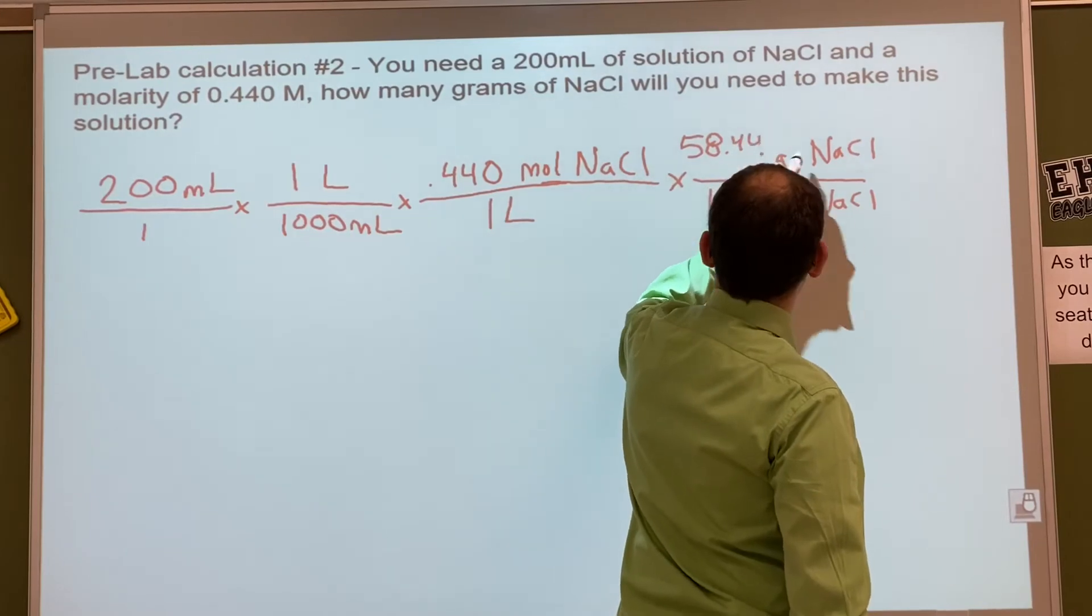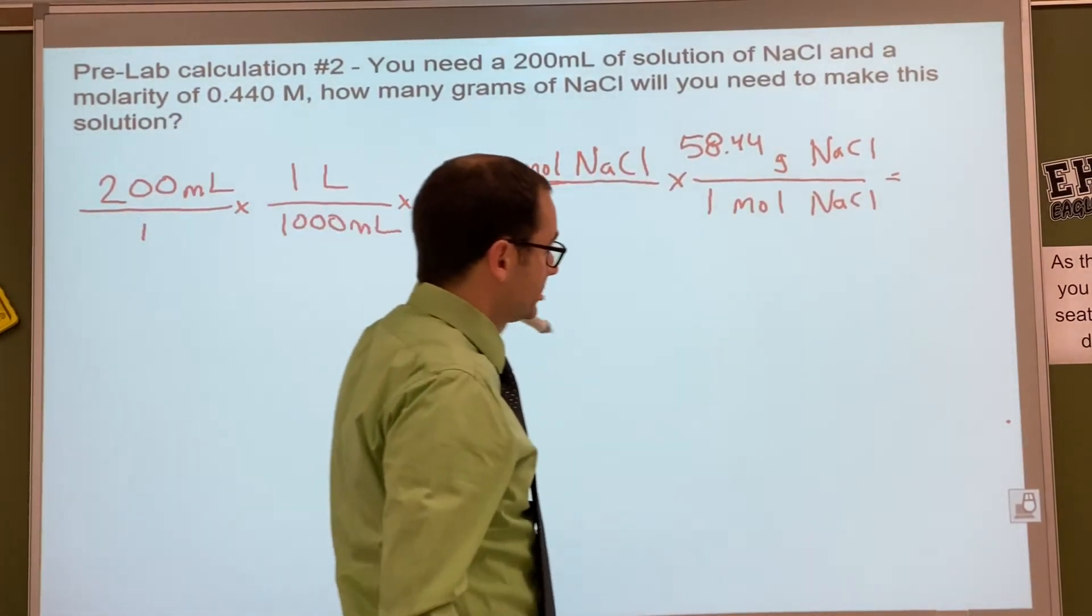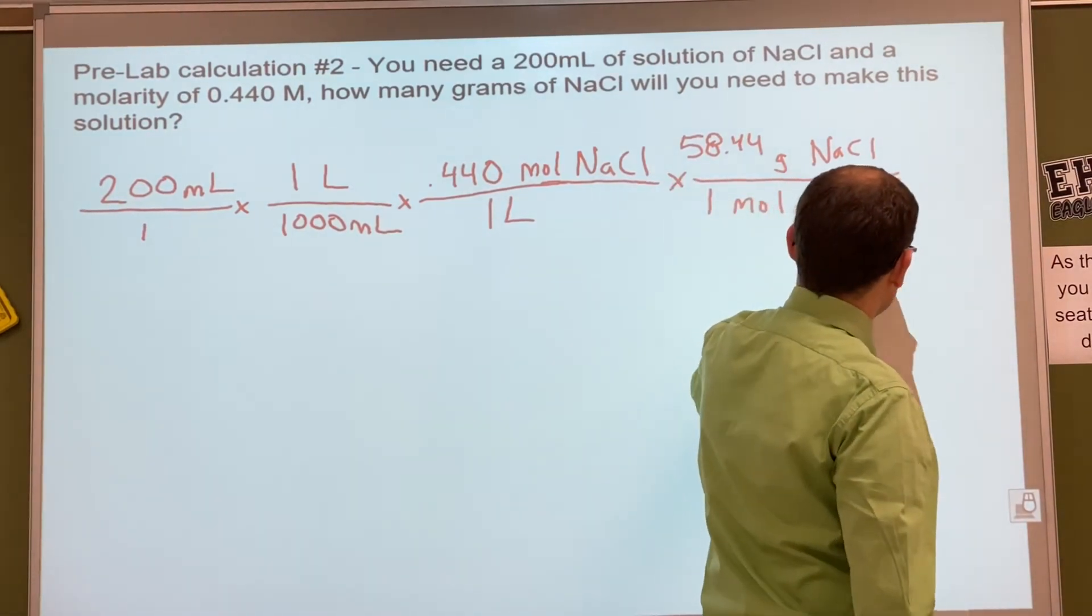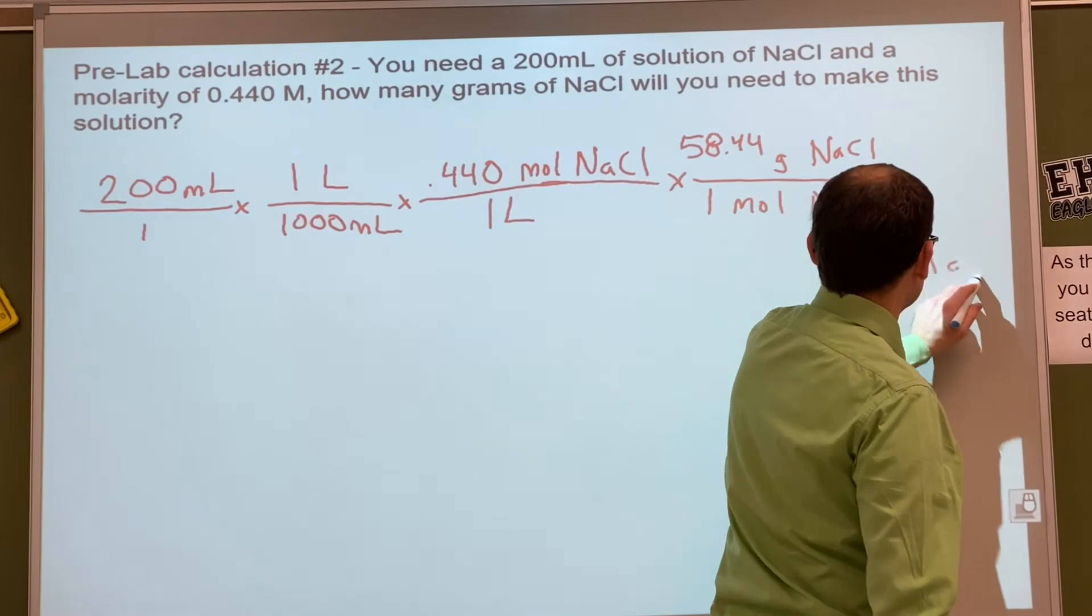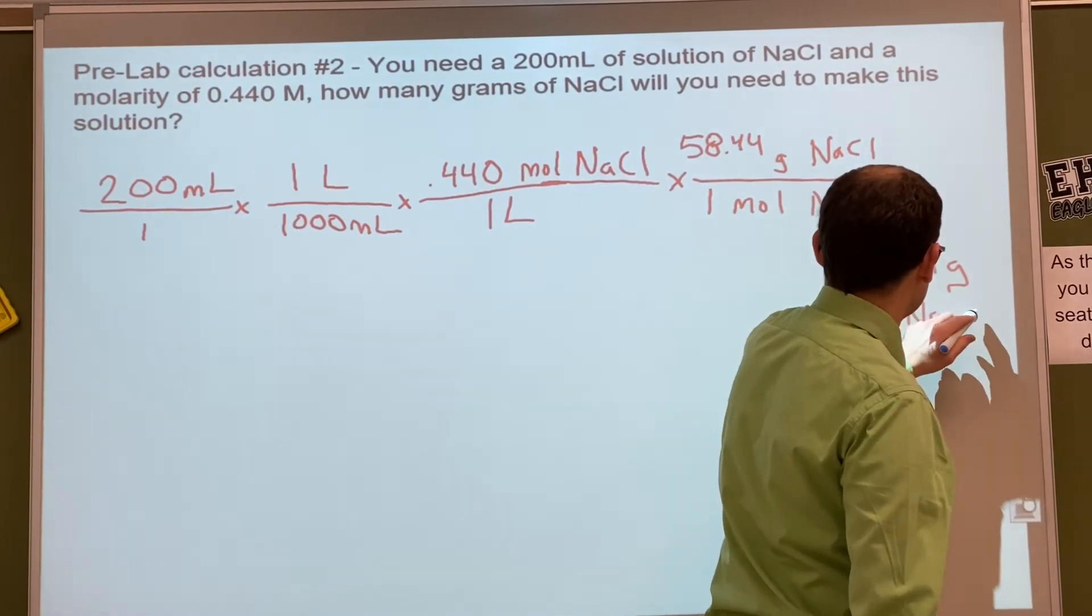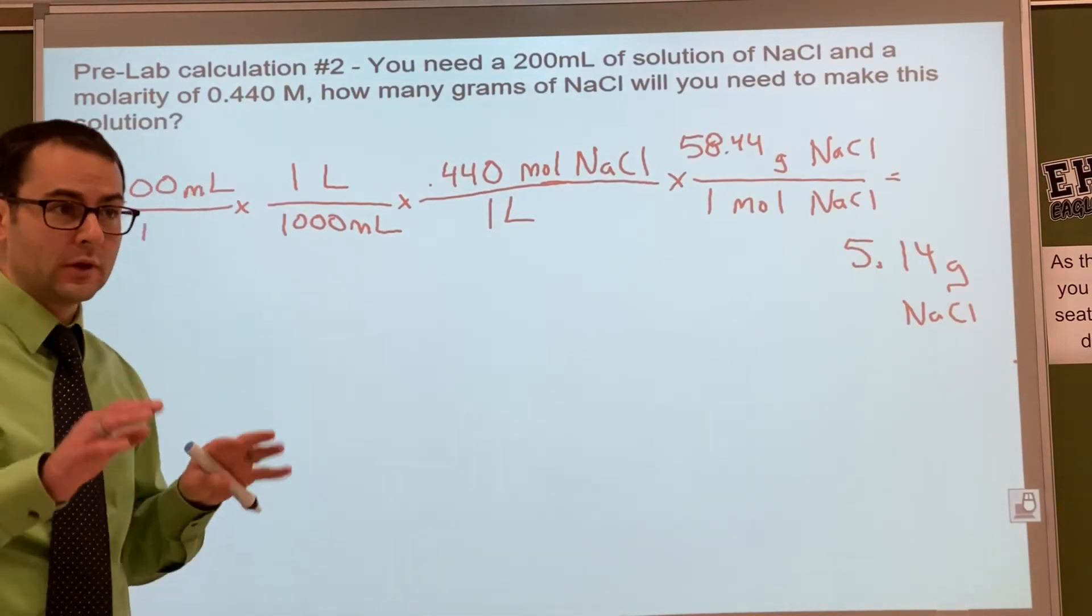Okay, and then once you multiply and divide, what do you get? Five point one four. Five point one four grams. Okay, five point one four, small number, right? It makes sense.